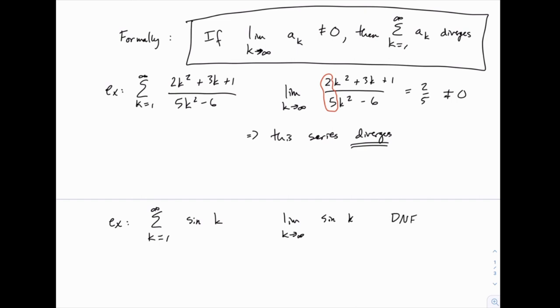So this limit does not exist. So since that limit does not exist, it can't equal 0, which means that this series also diverges according to the divergence test.